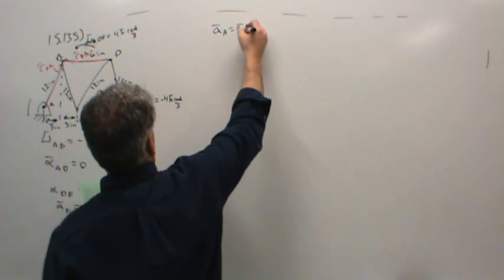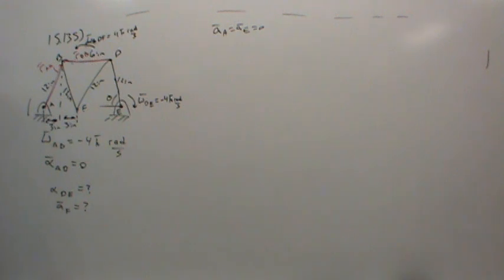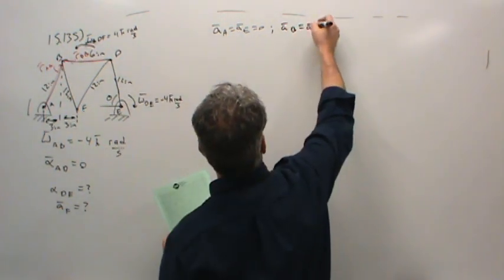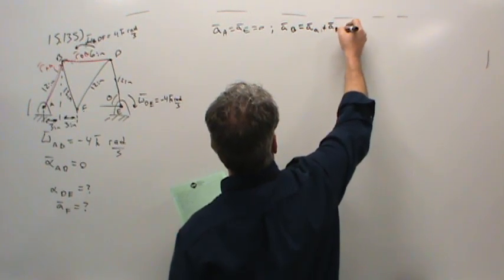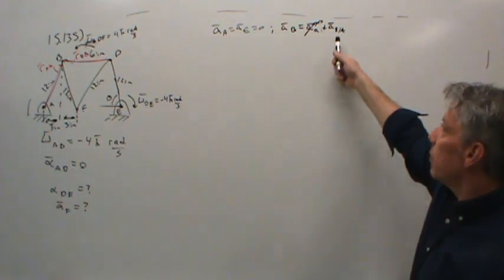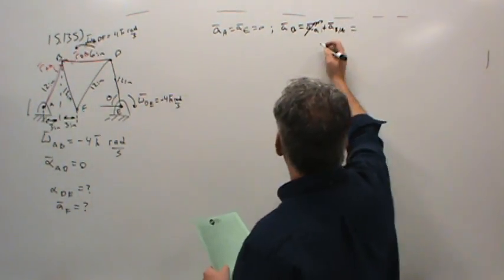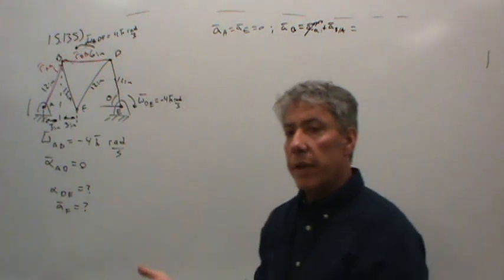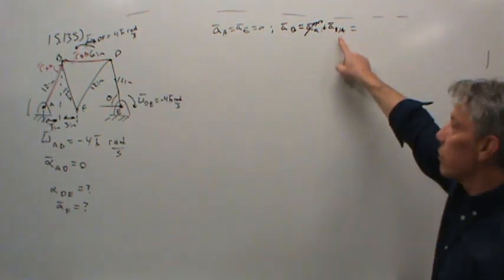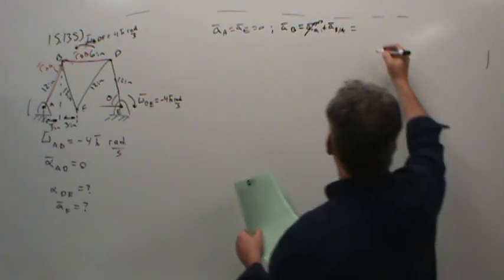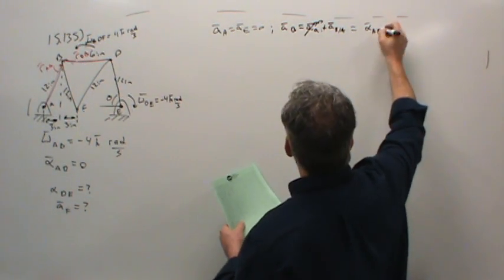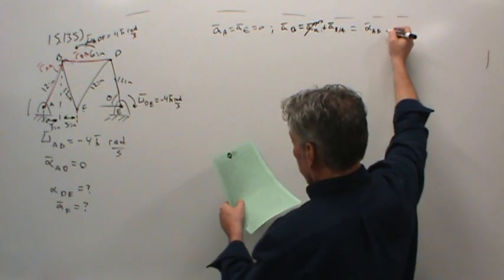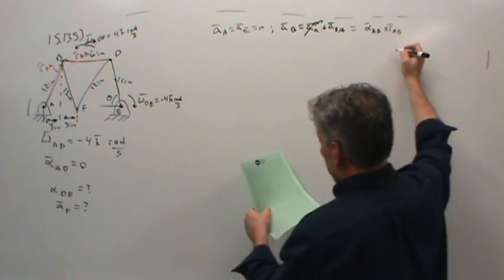The acceleration of points A and E is zero — those are fixed reference points. So the acceleration of point B reduces to just its acceleration relative to A. Now, how does relative acceleration break out? Relative velocity is always an omega cross R term, and relative acceleration always has normal and tangential components. The tangential piece is alpha cross R — here alpha of body AB crossed with the vector from A to B. The normal piece is omega cross omega cross R.